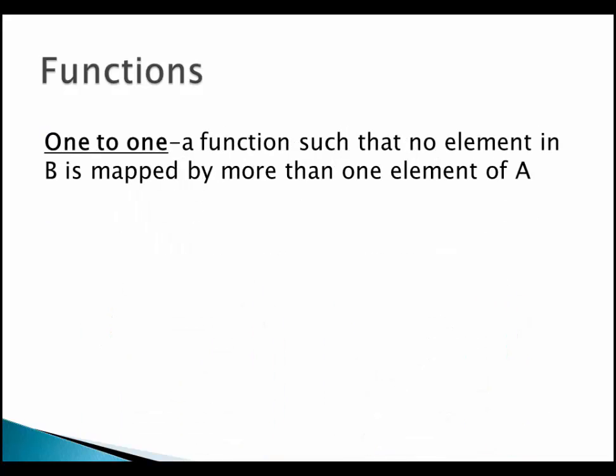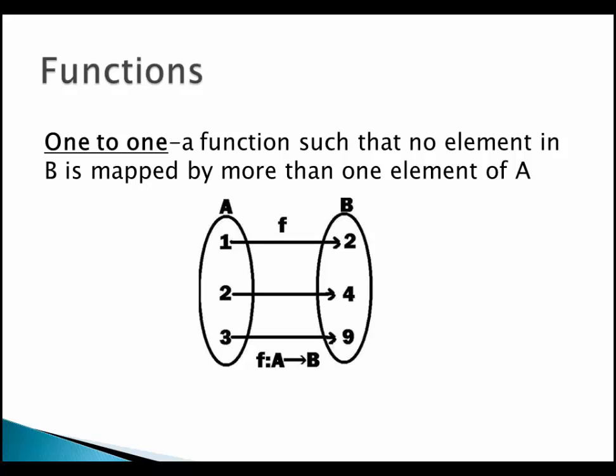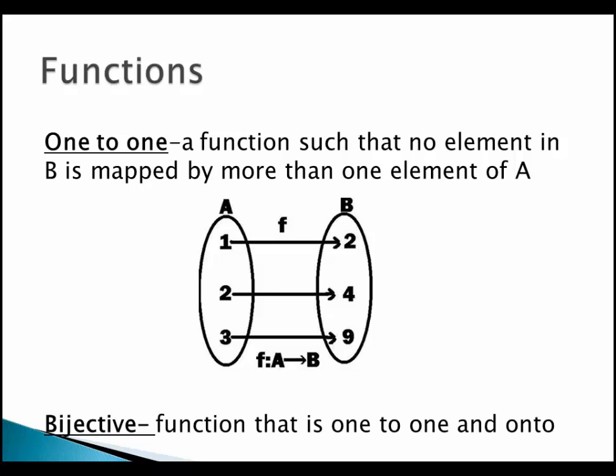The next type of function we're concerned with is a one-to-one function, where no element in B is mapped by more than one element of A. Looking at the picture, every element in B is mapped to by exactly one element of A. Lastly, a bijective function is one that is both one-to-one and onto.